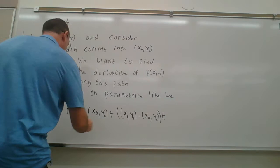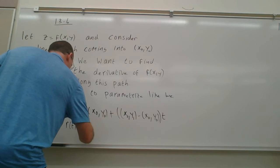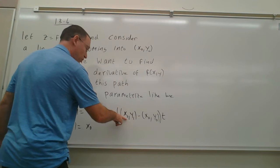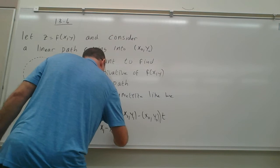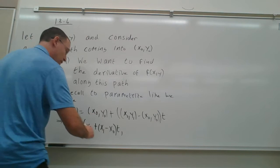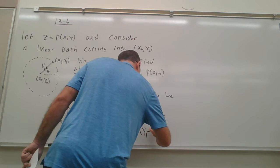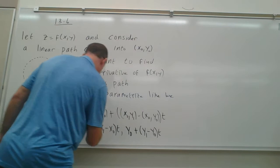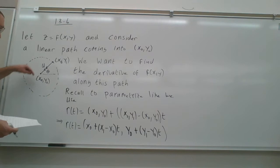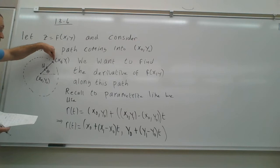Simplifying, r(t) equals (x₀ + (x₁ - x₀)t, y₀ + (y₁ - y₀)t). That would be our path, where at time zero we're at (x₀, y₀), and as t goes from zero to one we traverse the line.